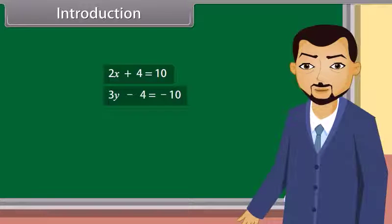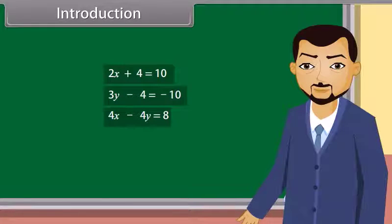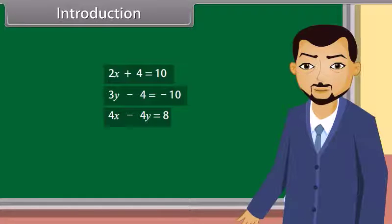And what type of equation is this? This is also a linear equation. This is also a linear equation, but it has two variables. So it's a linear equation in two variables. Today we will learn about the pair of linear equations in two variables.